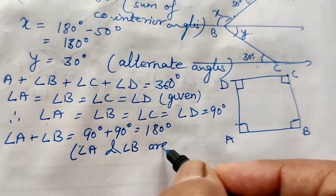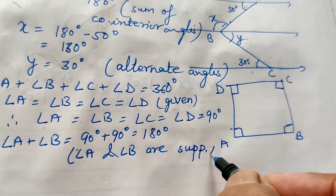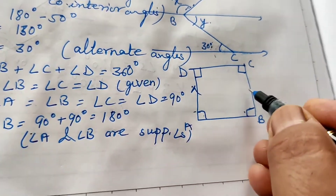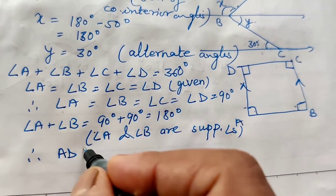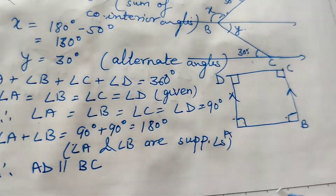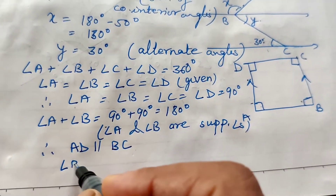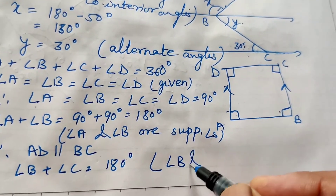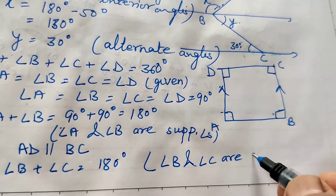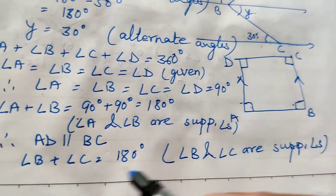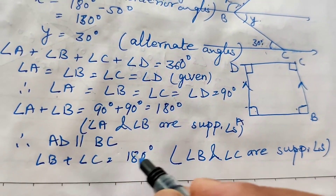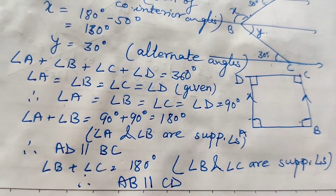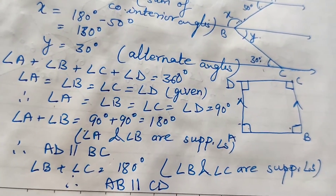Now we prove the lines are parallel. Angle A plus angle B equals 90 plus 90 equals 180 degrees, so angles A and B are supplementary. Therefore AD is parallel to BC. Similarly, angle B plus angle C equals 90 plus 90 equals 180 degrees, so angles B and C are supplementary. Therefore AB is parallel to CD. Both pairs of opposite sides are thus proven parallel.